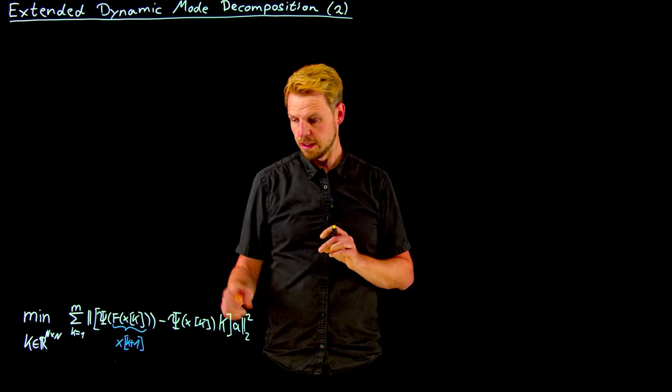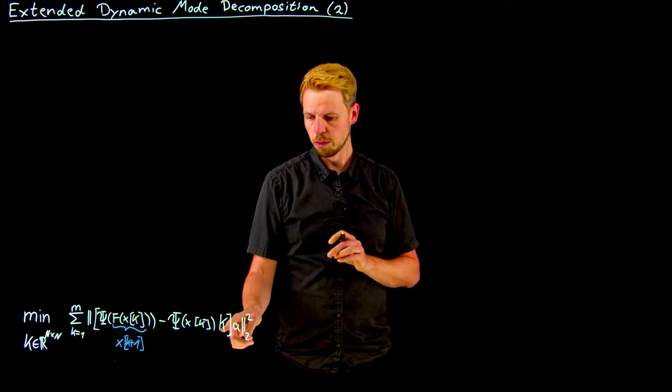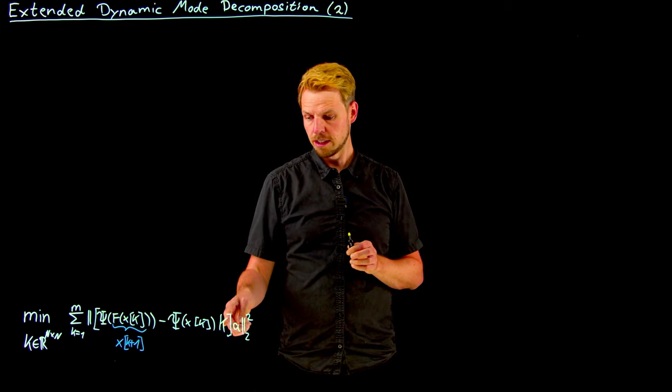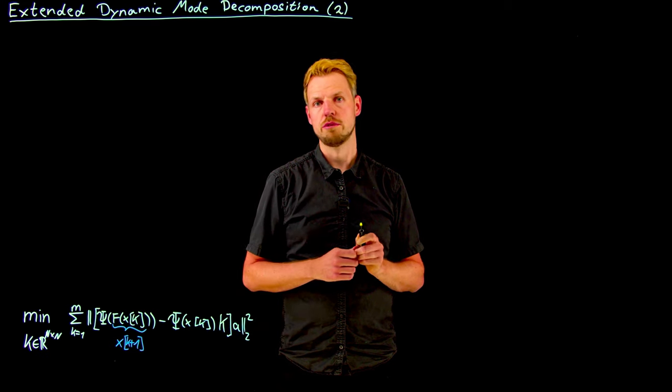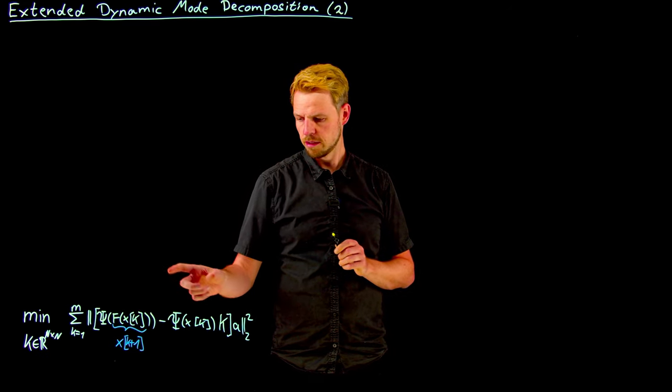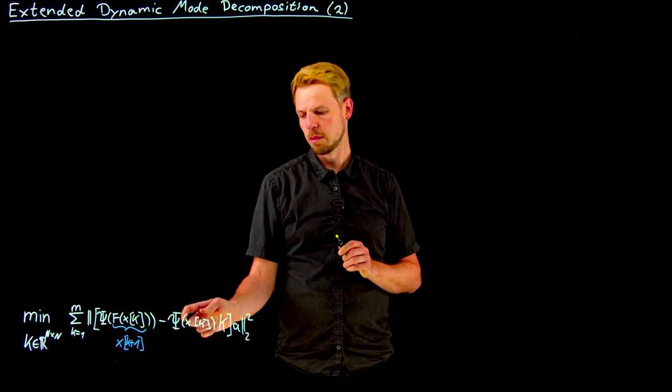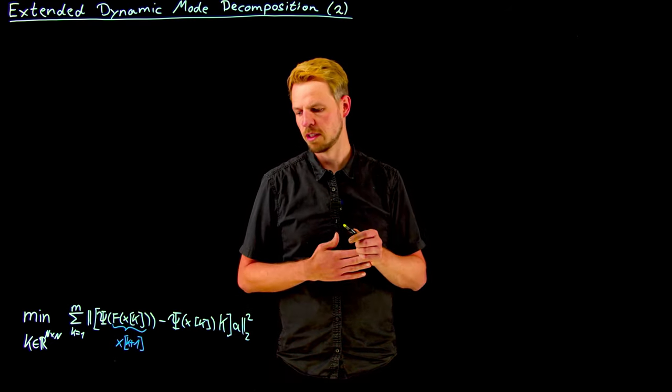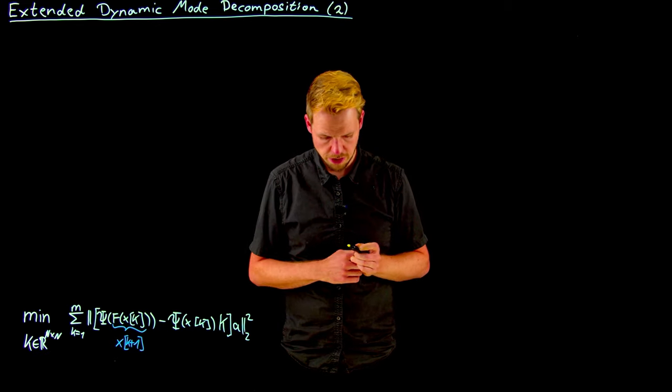And what we saw is that under these circumstances the Koopman operator really becomes a matrix that propagates forward in time these basis coefficients. So the expression in the next time step is the same as the expression in the current time step and then propagated forward in time by the Koopman operator which reduces to a matrix in this finite dimensional setting.